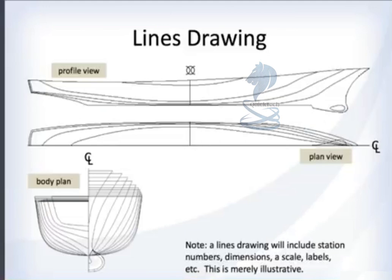You can take all of these lines and put them together in something called the lines drawing. The profile view shows the buttock lines, the plan view shows the water lines, and the body plan shows the stations — remember that the body plan shows stations forward of midships on the right and stations aft of midships on the left. In general, a lines drawing will have much more information: station numbers, dimension scales, labels, and so on; this is just an illustrative example.